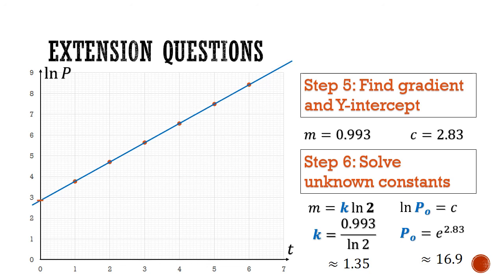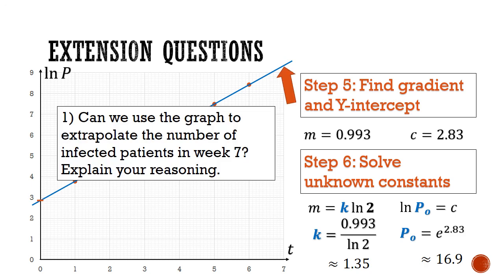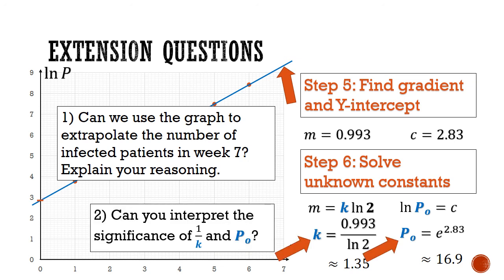Let me end with two extension questions. One: can we use this graph to extrapolate the number of infected patients in week 7? Explain your reasoning clearly. Two: can you interpret the significance of 1 over k and p₀? If you think you have the answer, put it in the comment section below.